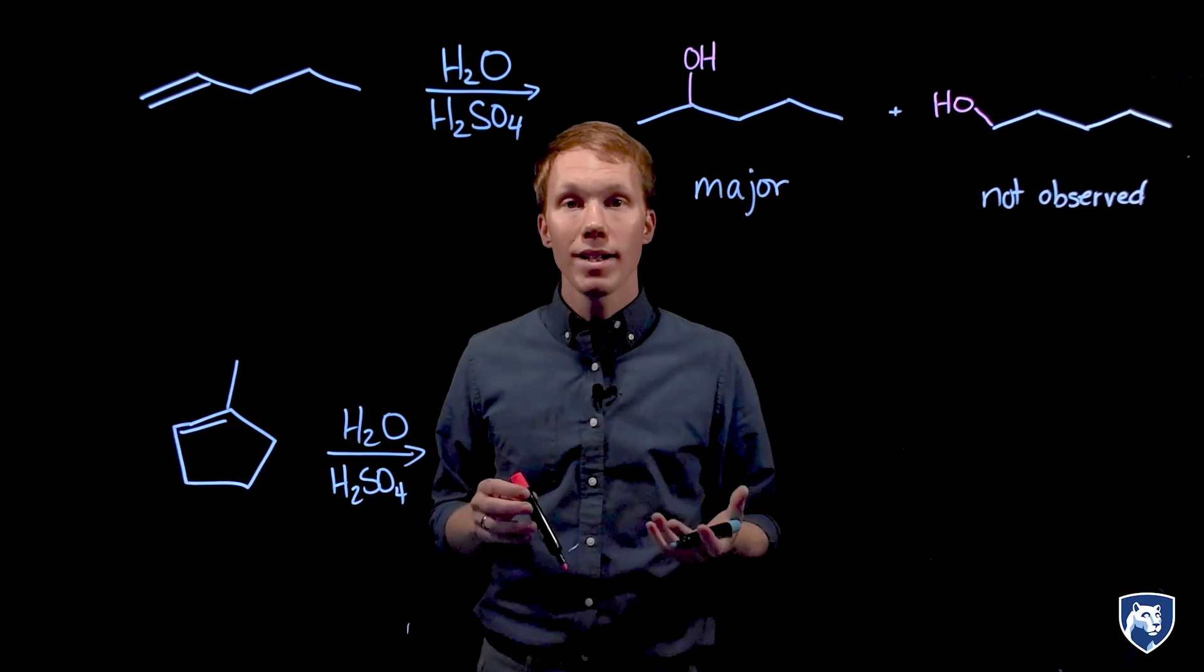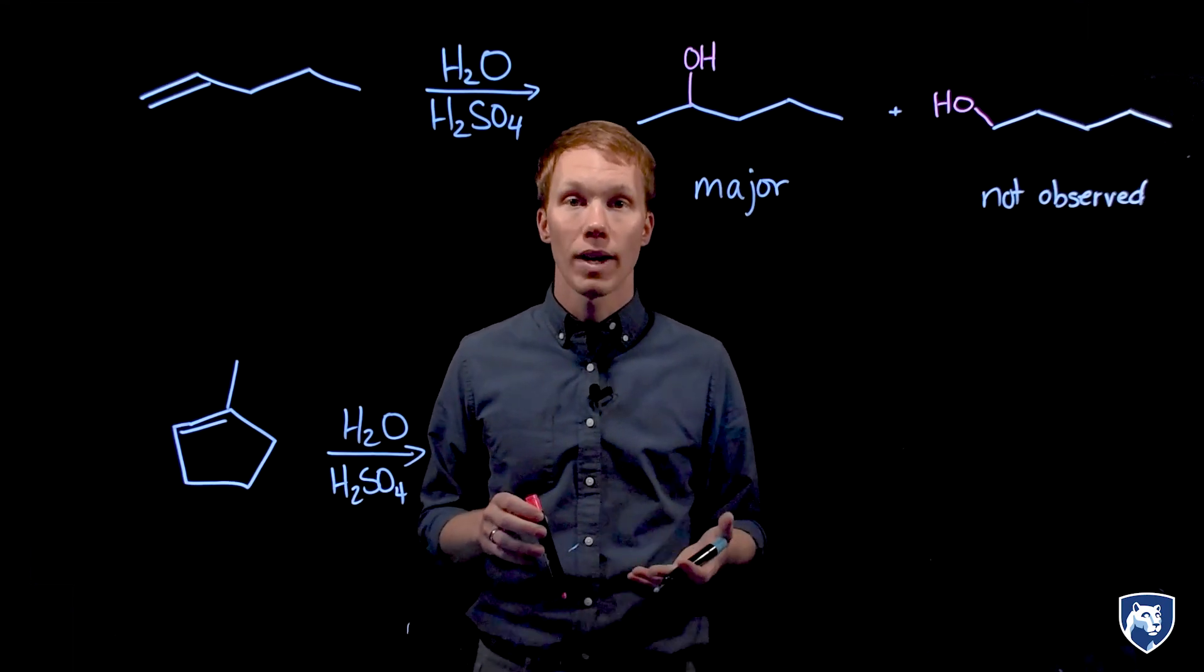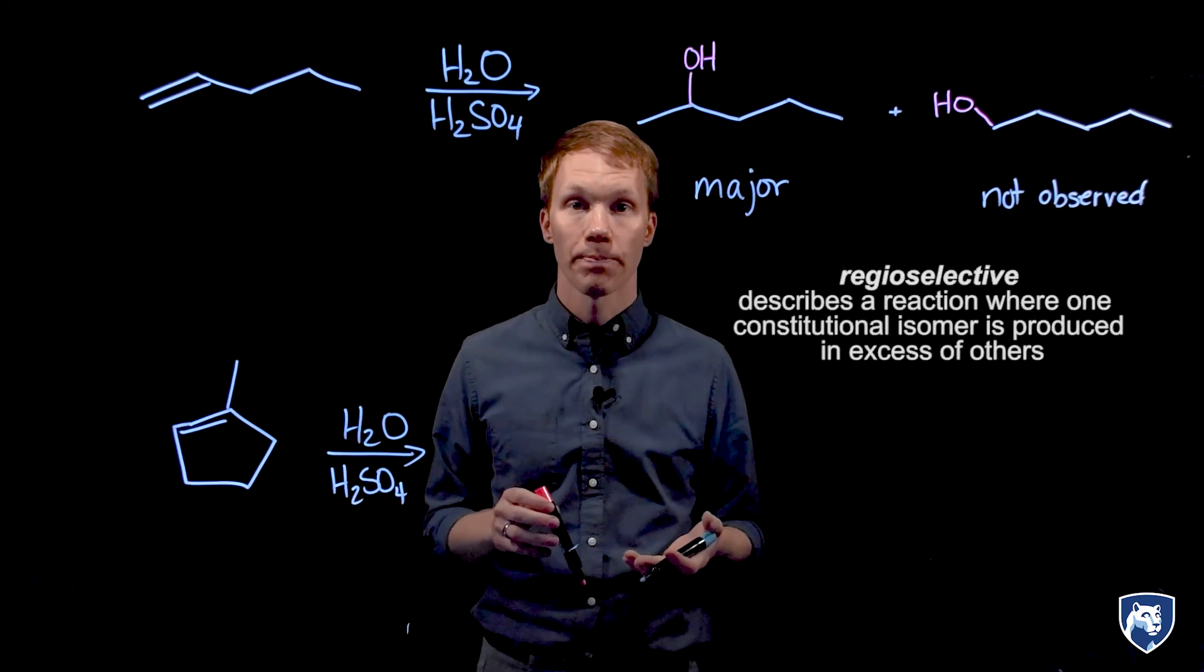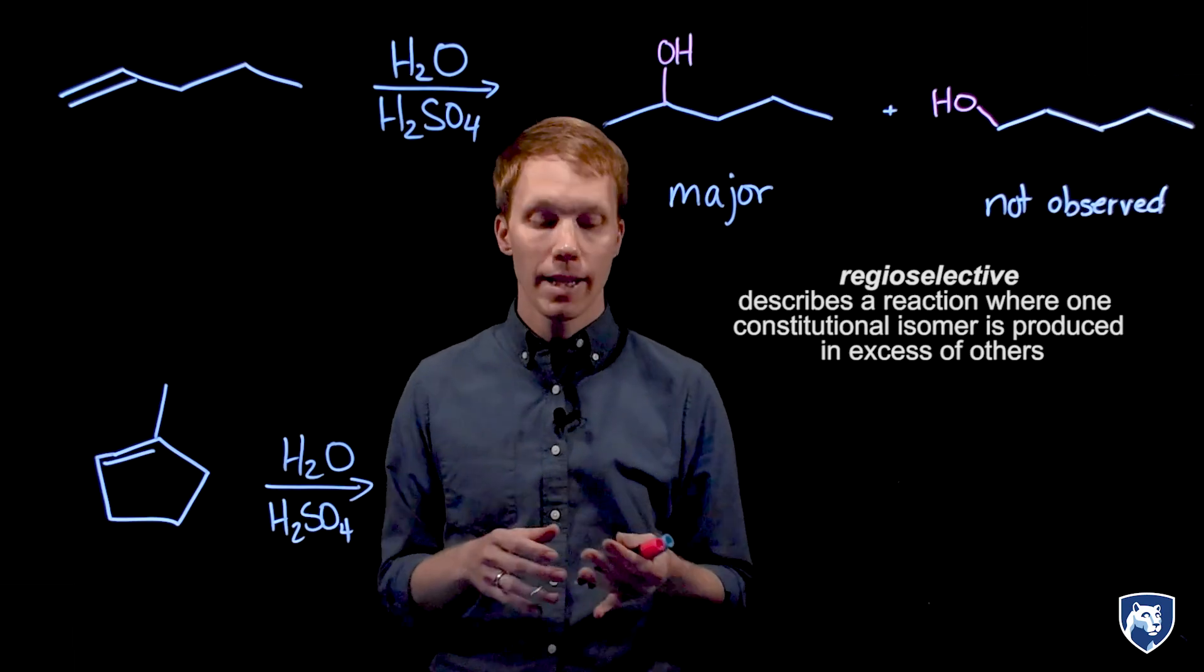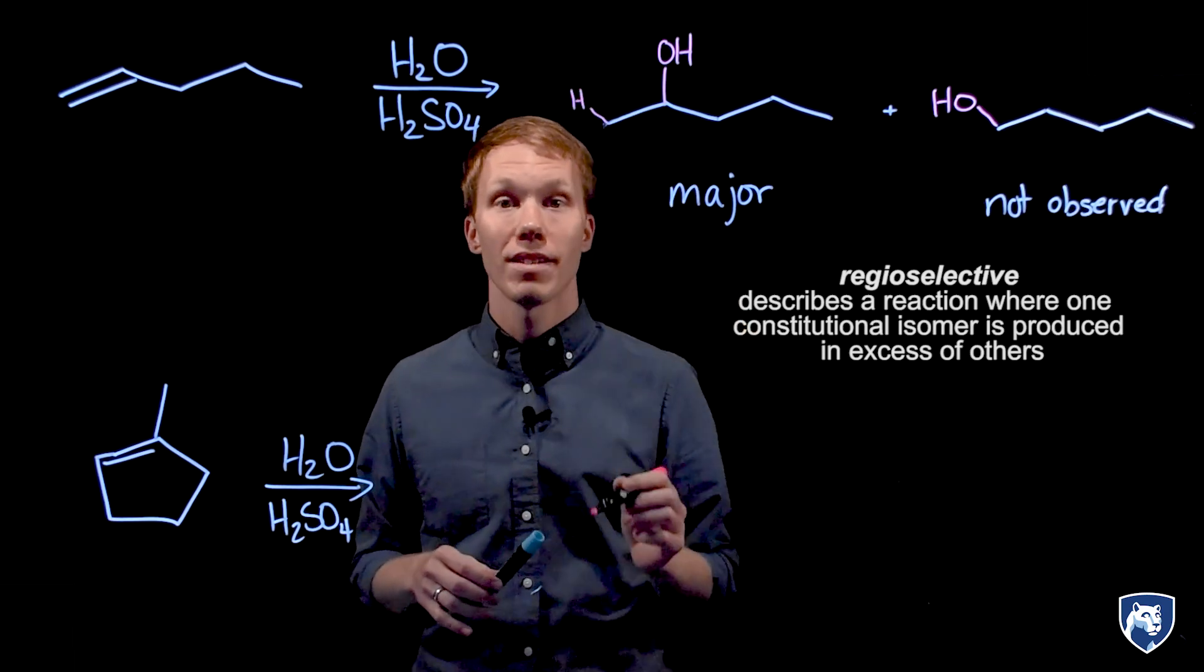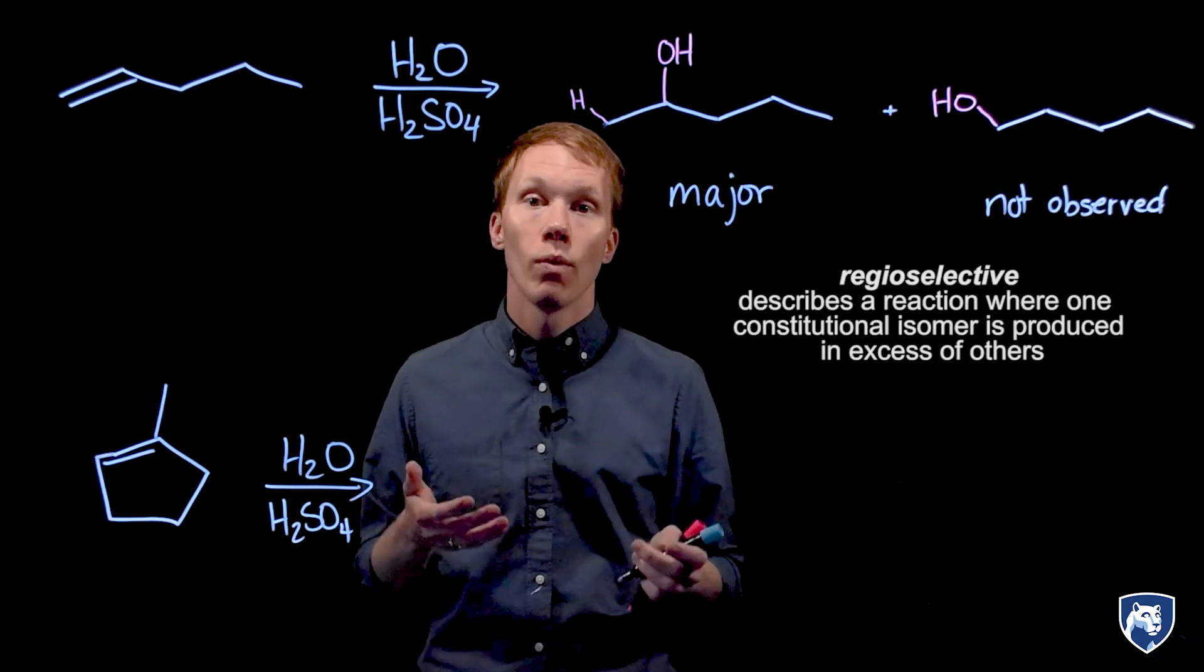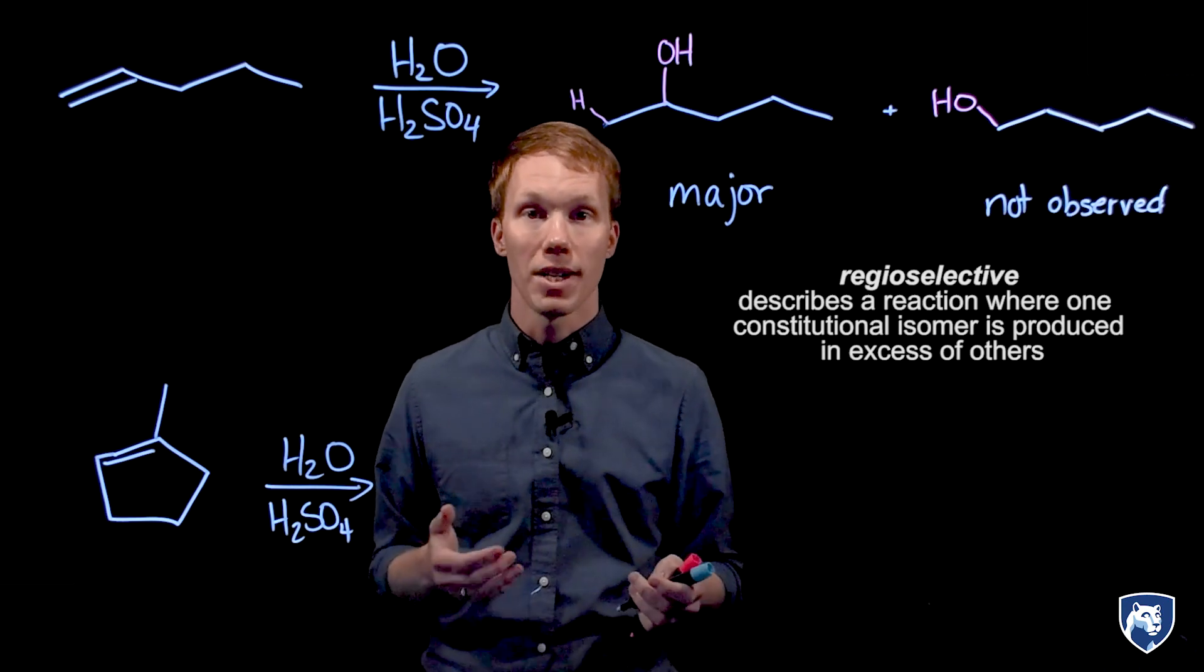This fact that one constitutional isomer is produced in excess of the other means that this reaction is regioselective. We can also say that this reaction obeys Markovnikov's rule, namely that the hydrogen has added to the less substituted carbon. We will be able to explain why this happens when we look at the mechanism in a later video.